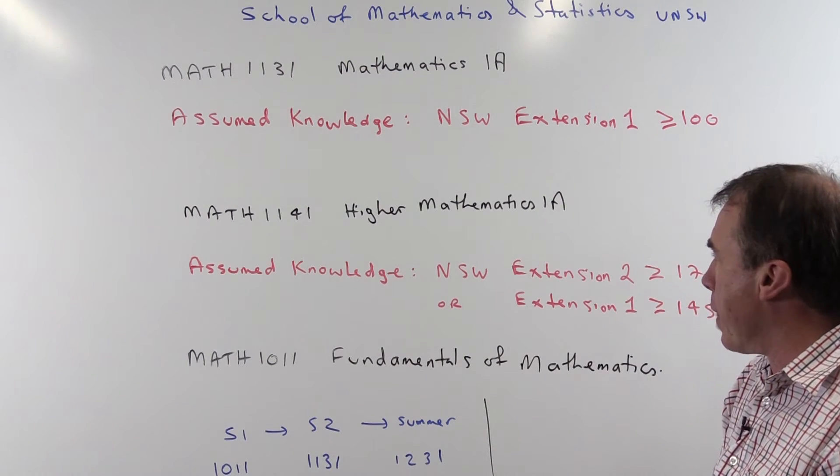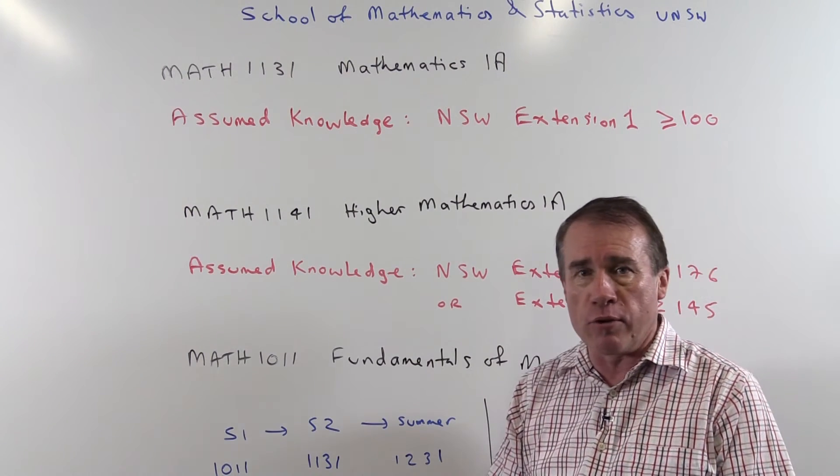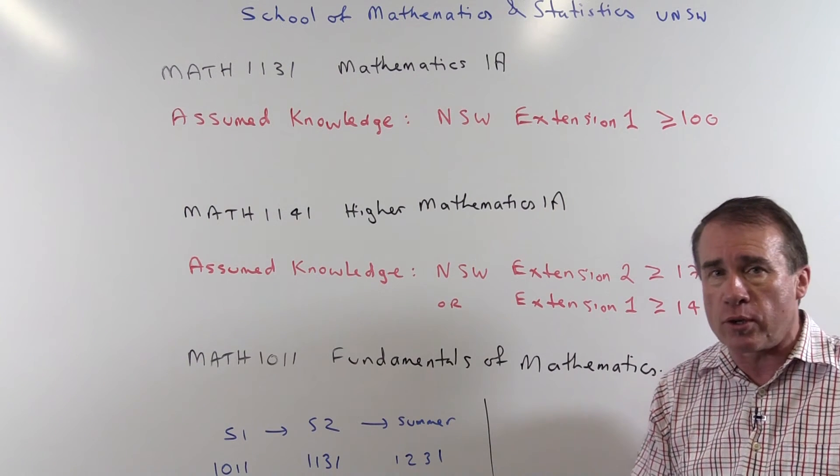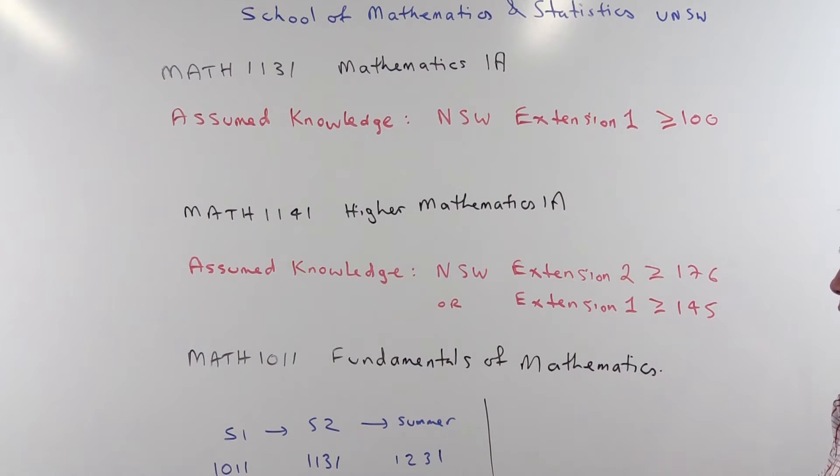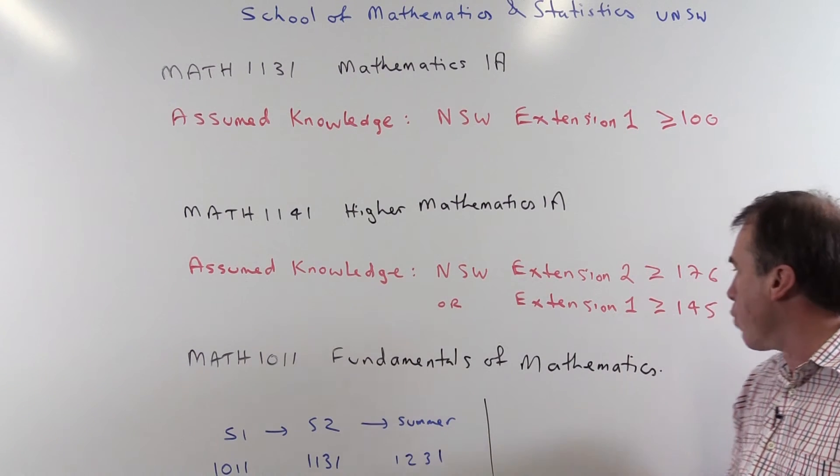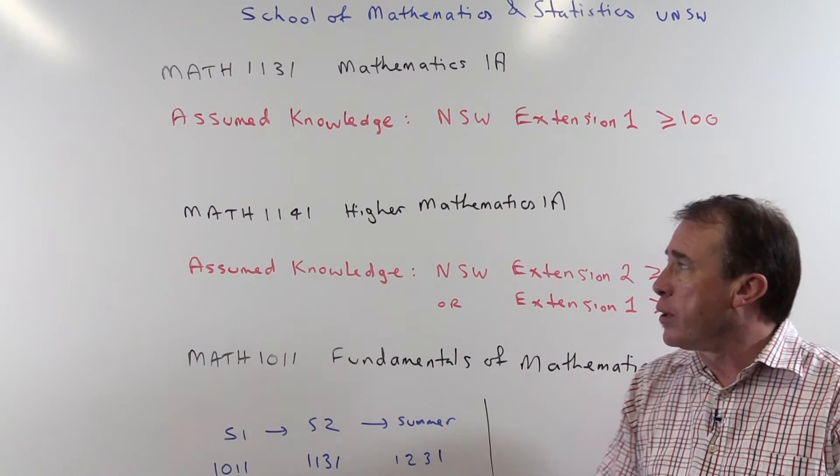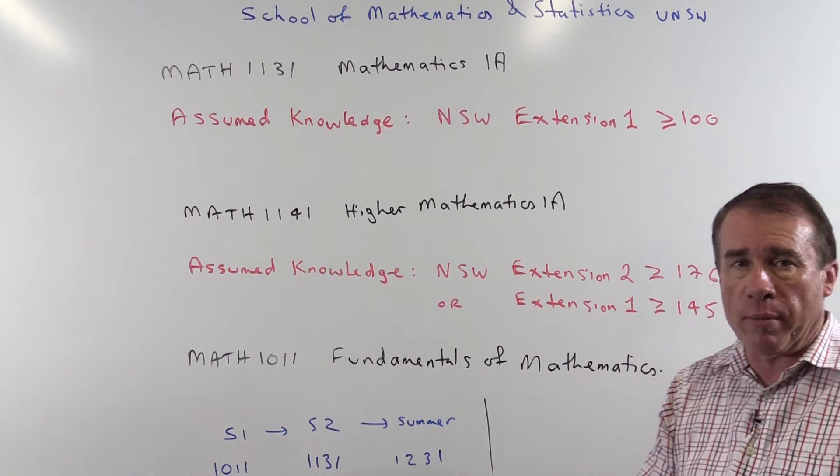If you're really interested in mathematics and you're very good at it and you've done New South Wales Extension 2 and scored a mark say bigger than 176 or perhaps you've done Extension 1 and you've scored bigger than say 145 then you might think about enrolling in higher mathematics.